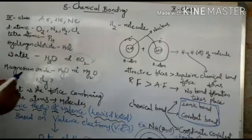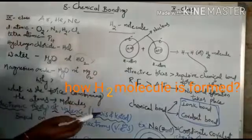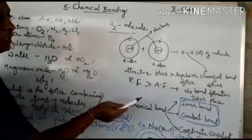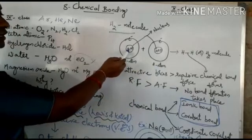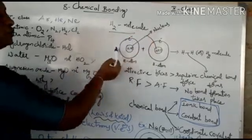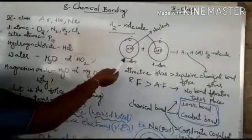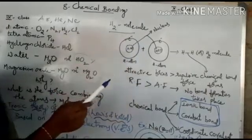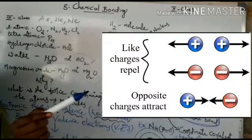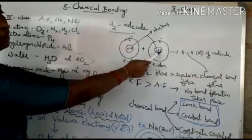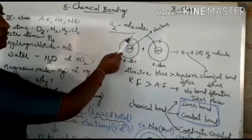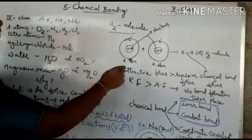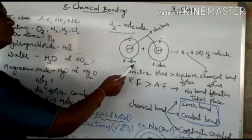First we will look at how the H2 molecule is formed and what force acts between the 2 hydrogen atoms. You already know that at the center of an atom is the nucleus, containing neutrons and protons, and electrons revolve around the nucleus according to Rutherford's theory. Electrons have negative charge, neutrons have no charge, and protons have positive charge. There is an attraction between the electron of one hydrogen atom and the nucleus of the other hydrogen atom.